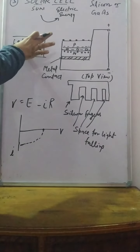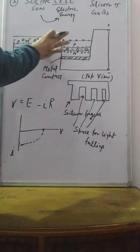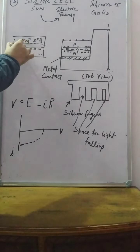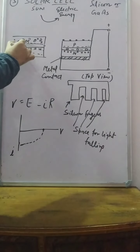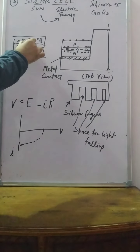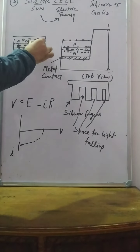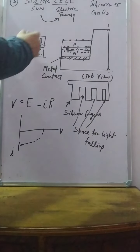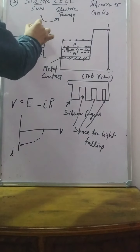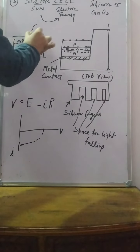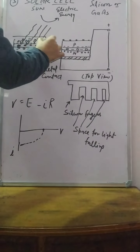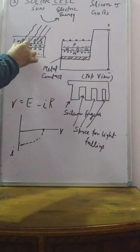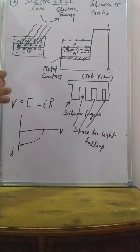In this depletion layer, the particular atoms are neutralized. When light from the sun falls on it, this atom is split up — it is split up into positive and negative charges.